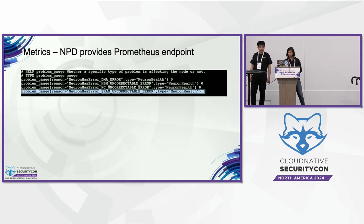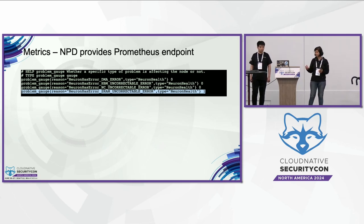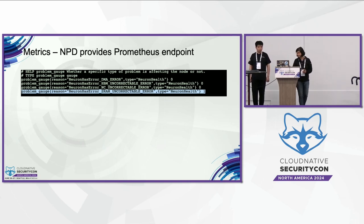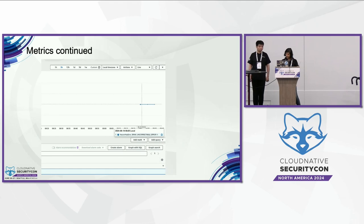In terms of metrics, NPD itself comes with a Prometheus target that can be scraped and will integrate with any Prometheus and Grafana-based monitoring system. The four metrics show up as gauges, and the gauge turns to one when the condition is triggered. In our environment, we are also publishing the metric to CloudWatch, where it's available as well.